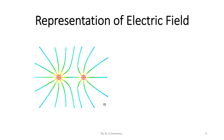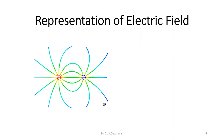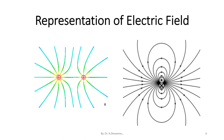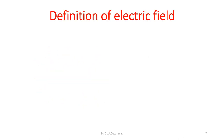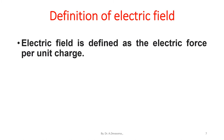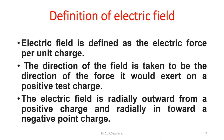In this diagram, the positively charged particle and the negatively charged particle are represented; they attract each other. Electric field is defined as the electric force per unit charge. The direction of the field is taken to be the direction of the force it would exert on a positive test charge. The electric field is radially outward from a positive charge and radially inward towards a negative point charge.